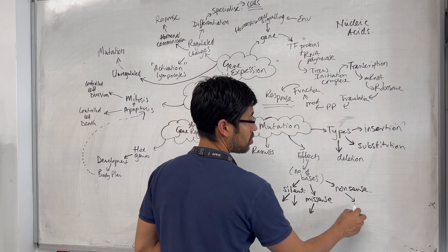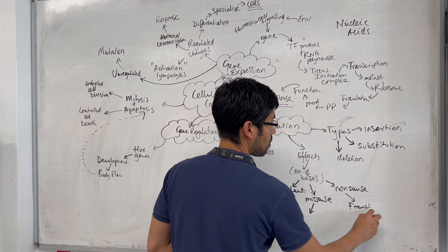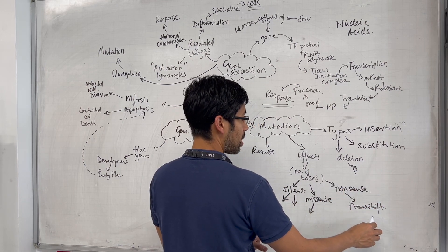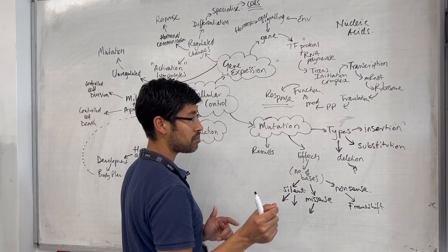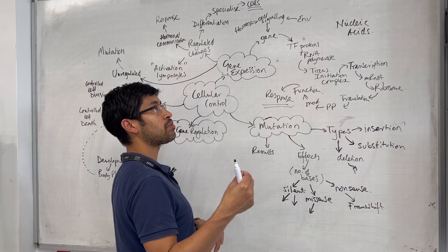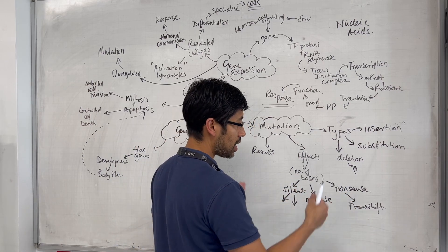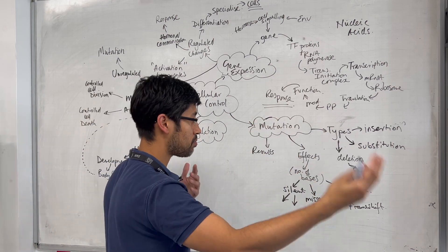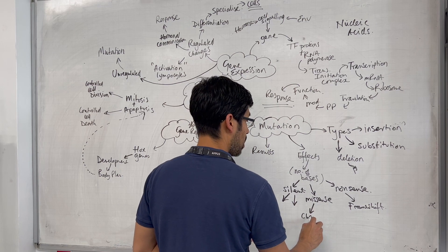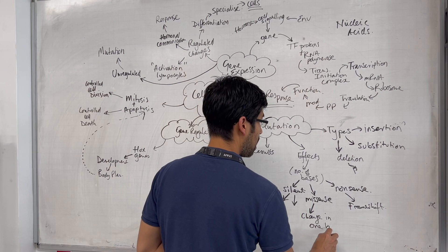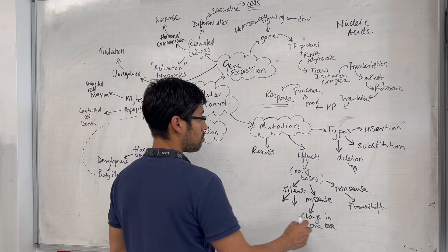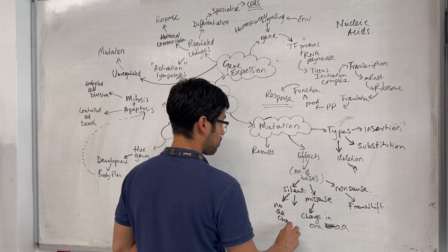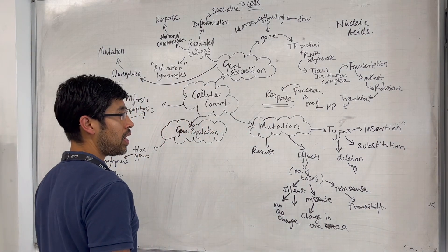We could have silent, missense, and nonsense mutations. Nonsense mutations are usually to do with frameshift. If you're inserting or deleting non-multiples of three bases, you're likely to cause a frameshift — a change in the reading frame — and that's usually harmful because it might prematurely introduce a stop codon. Missense means a change in one amino acid. Silent means no amino acid change.